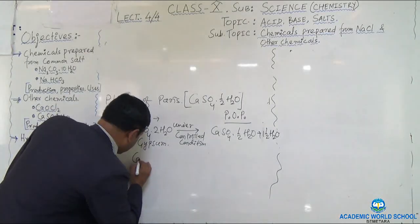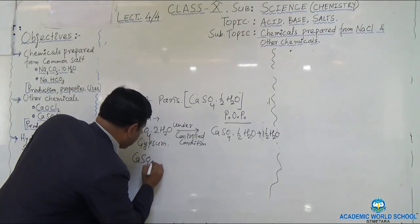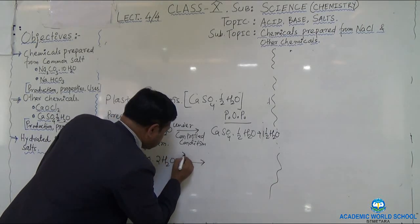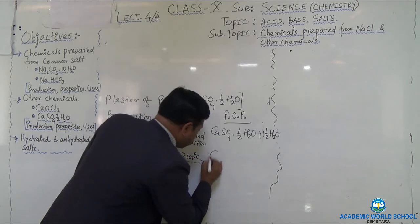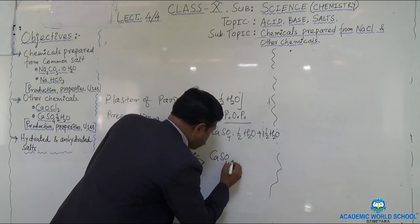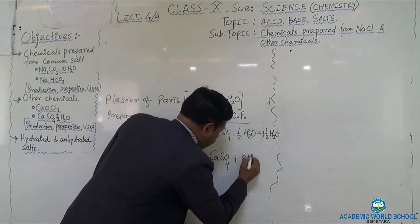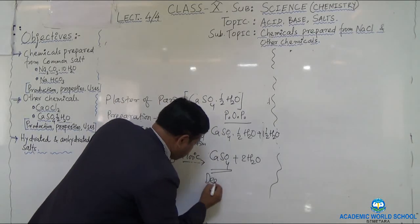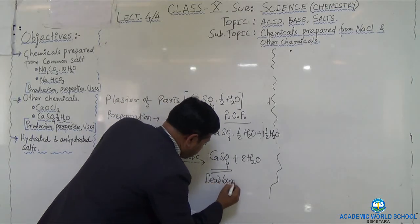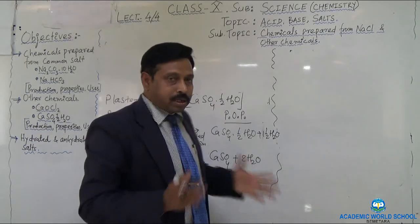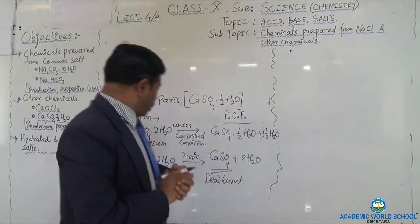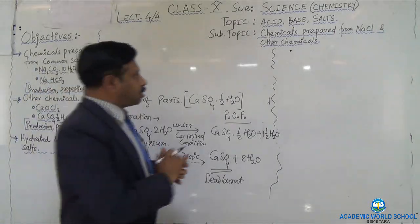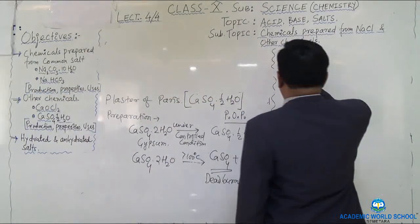Writing the equation: CaSO₄·2H₂O when heated above 100°C gives CaSO₄ + 2H₂O removed. This is called dead burn — a hard mass with no setting. This is the method of preparation of plaster of Paris.